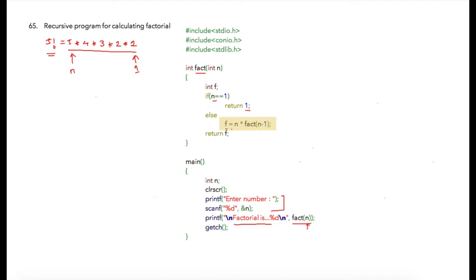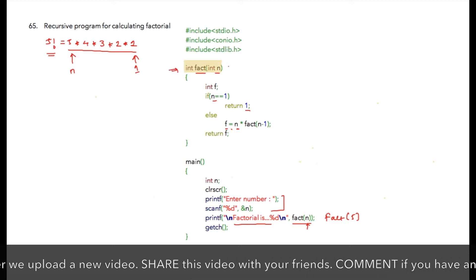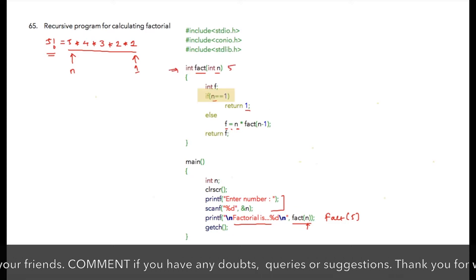In the first call, the call is fact(5), so the call will go here and n equals 5. Because this condition is false (5 is not equal to 1), the else block will be executed. What is going to happen now is this operation will be halted because the compiler has to wait for this execution, as this value has to get evaluated first.